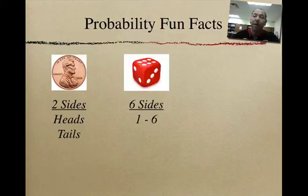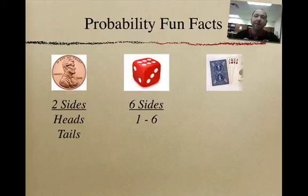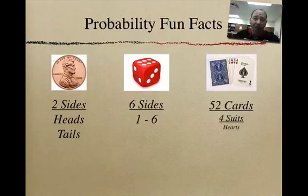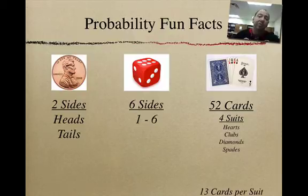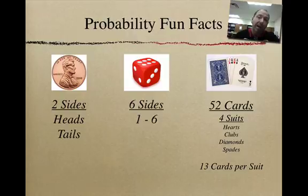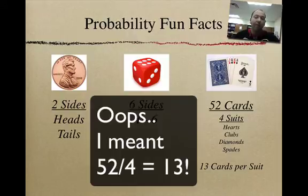Now, I understand there are games out there where they have like 32-sided die. But if you ever have to figure out what the probability of rolling, let's say, a three is, we're going to assume a six-sided die. And then the one that a lot of us probably aren't very familiar with is a deck of cards. There are 52 cards in a deck. There are four different suits: hearts, clubs, diamonds, and spades. So if we take those four suits and divide it by four, we end up with 13 cards per suit.